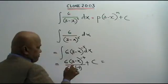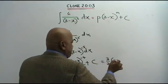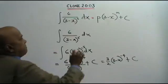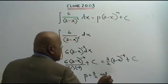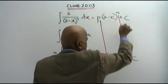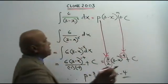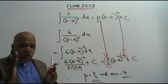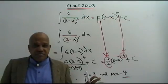Simplifying: 6 over 4 cancels to 3 over 2. So we get 3 over 2 times (3 minus x) to the power of negative 4 plus C. Therefore by comparison, P equals 3 over 2 and M equals negative 4. Apply the rules properly and you should be able to arrive at the answer without problems. Thank you.